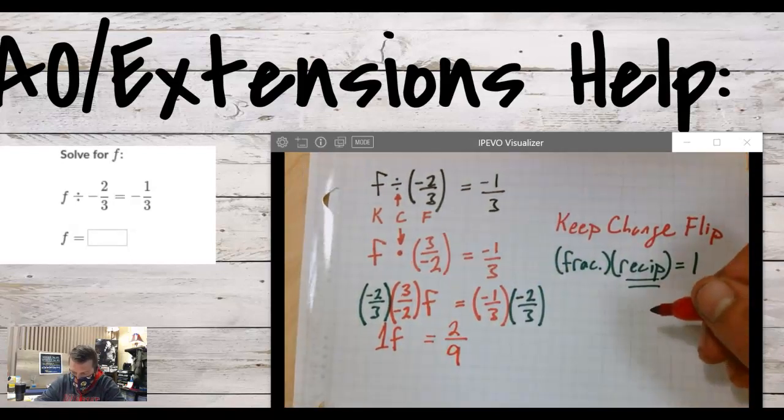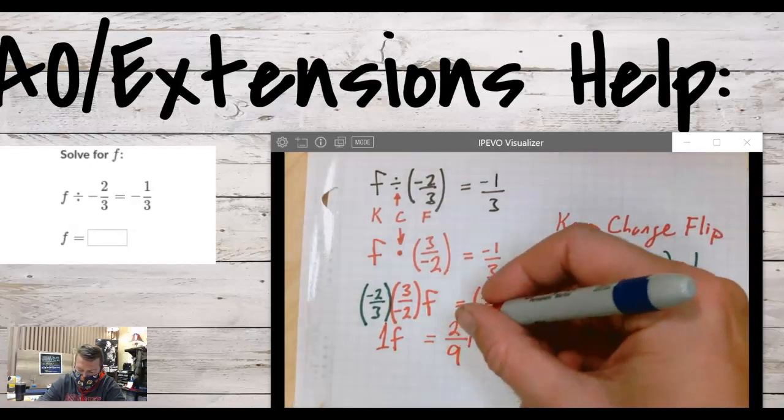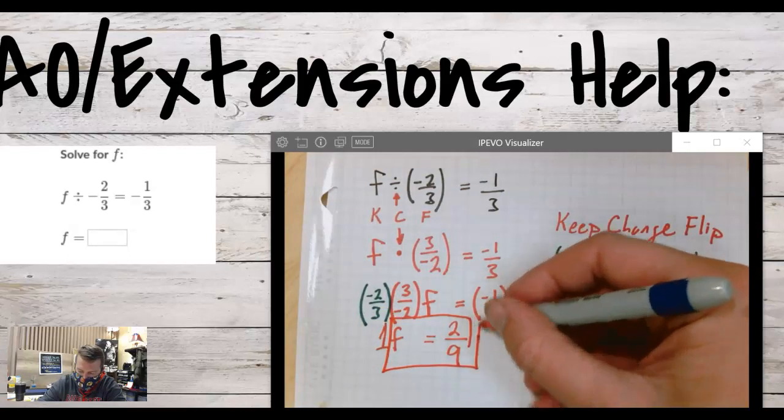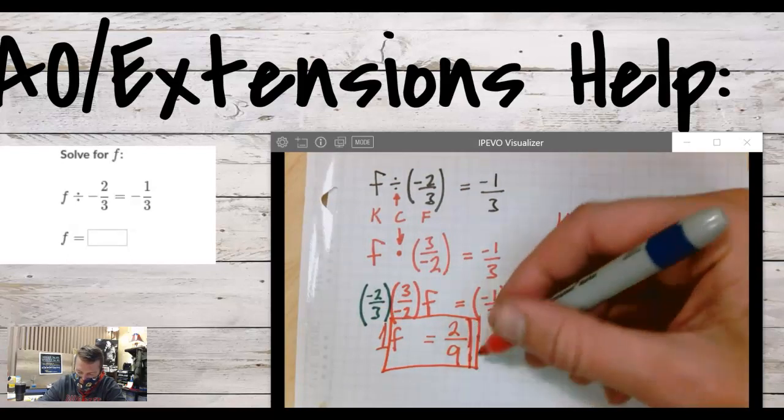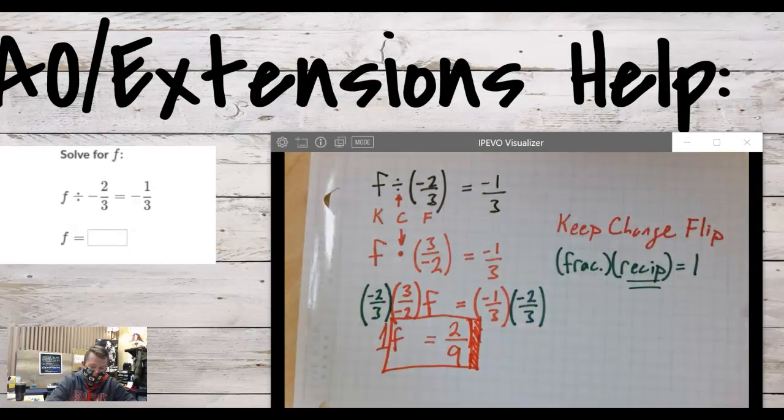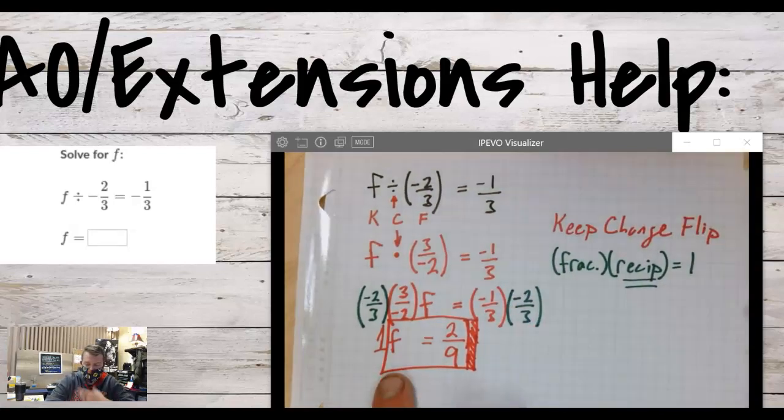I don't think this can reduce. Yeah, I think two ninths. I think that's it. So go ahead and type that in and check that. That one's right. There we go. I don't know why my box got weird there. But f is two ninths. We don't need to write one f.